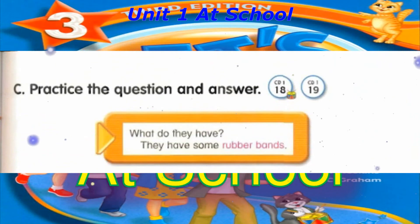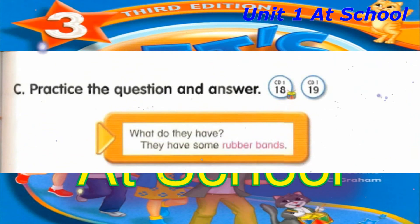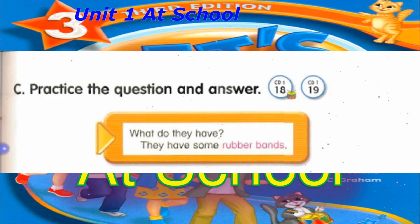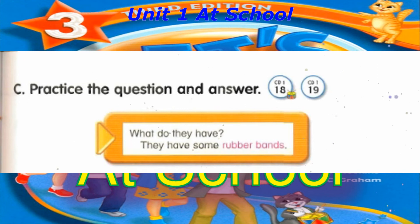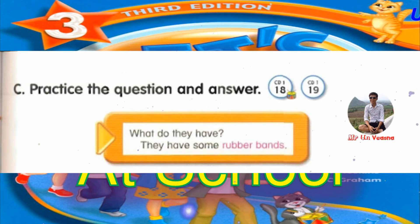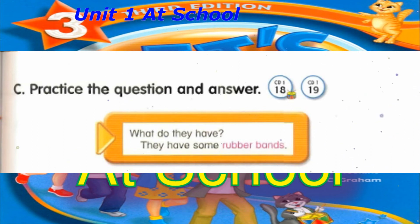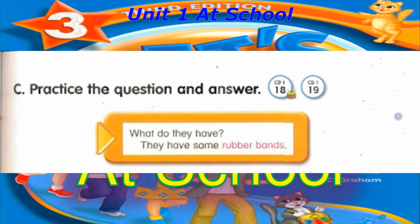Track 18. C. Practice the question and answer. What do they have? They have some rubber bands. What do they have? They have some rubber bands.